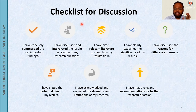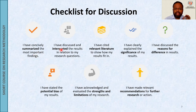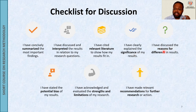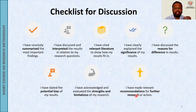We have a checklist for discussion that you should go through before writing any discussion. First: I have concisely summarized the most important findings — this is the consolidation or summary of the results. I have discussed and interpreted the results in relation to my research question. I have cited relevant literature to show how my results fit into the study. I have clearly explained the significance of my results. I have discussed the reasons for differences in the results. I have stated the potential bias of my results. I have acknowledged and evaluated the strengths and limitations of my research. I have made relevant recommendations for further research or action.